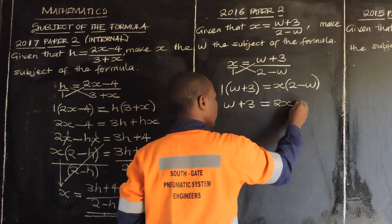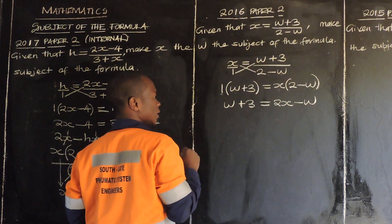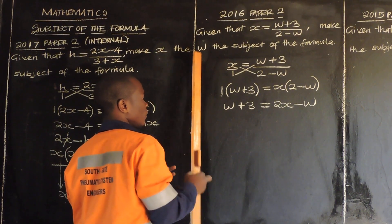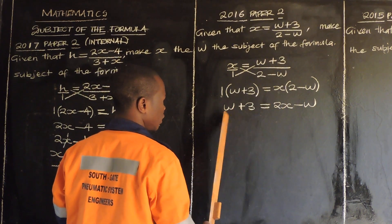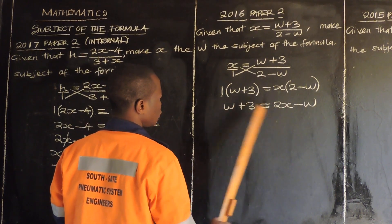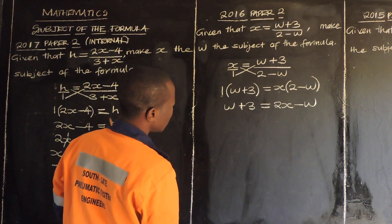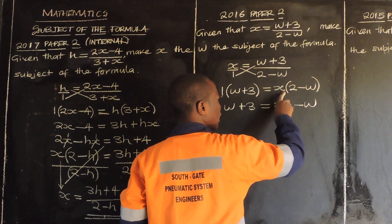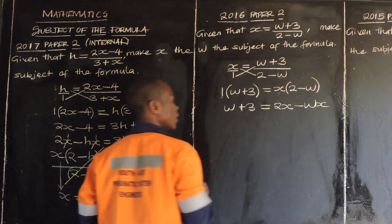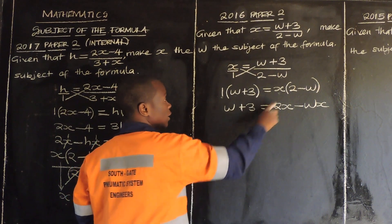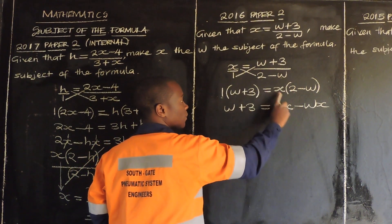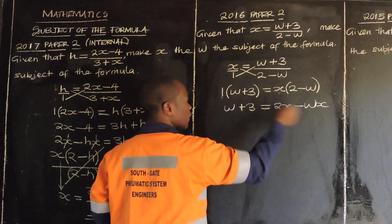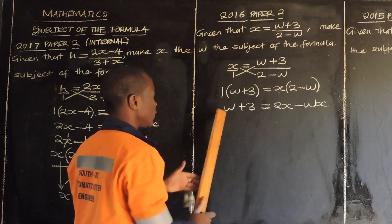x times negative w gives negative wx. Since we are making w the subject of the formula, we need to group the w terms together. So x times w gives wx — so that term is wx. We have w on this side, and this wx is negative, so it becomes positive wx on the other side.